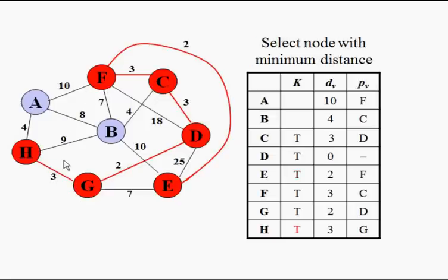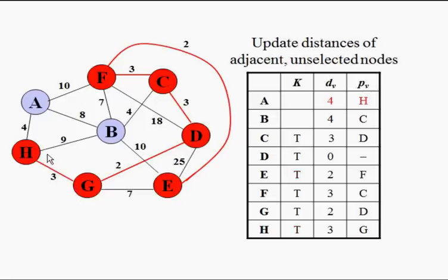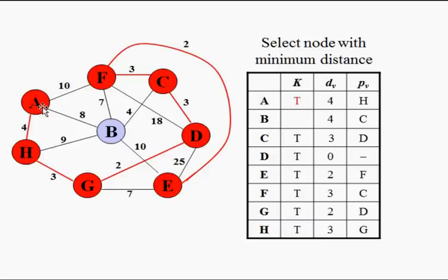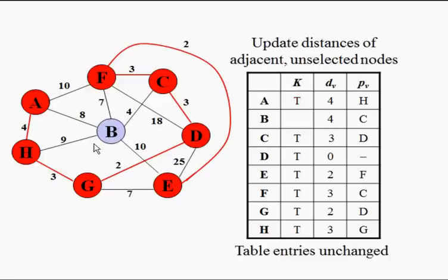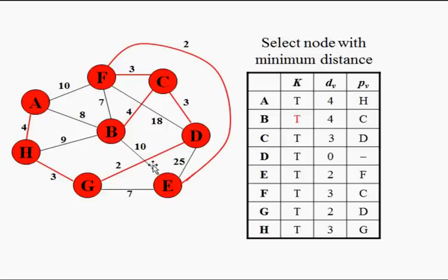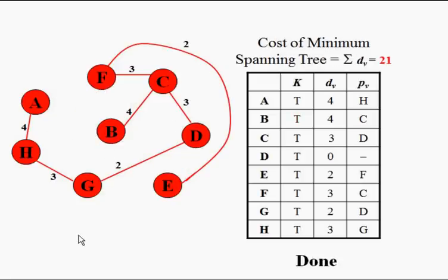Continuing from the current set, we go from g to h, then from h to a. Now only vertex b is left. There are many paths that can reach b, but we select the minimum of all those paths, which is c to b. This completes the spanning tree.